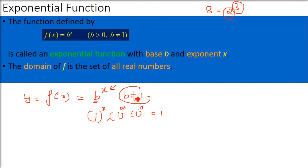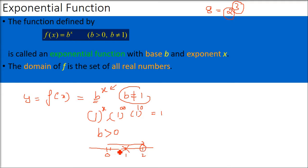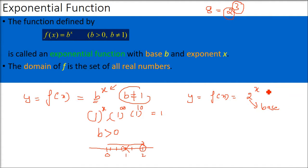The first restriction: for an exponential function, the base cannot be equal to 1. The second restriction is that b has to be greater than 0. So b can be greater than 0, but should not be 1. Values between 0 and 1 are allowed, and values greater than 1 are also allowed. But b cannot be 1 and b cannot be less than 0.